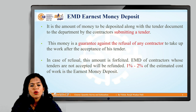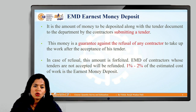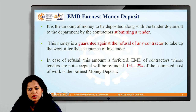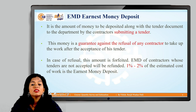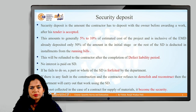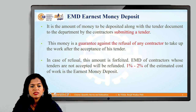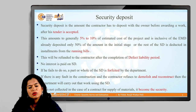EMD is generally one to two percent of the total project cost. If a contractor refuses to do the work after being awarded the tender, the EMD amount is forfeited and not refunded. If bidders are not selected during the process, their EMD is refunded. If a person fails to submit the EMD, their tender is considered invalid.